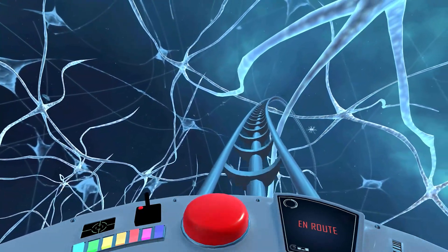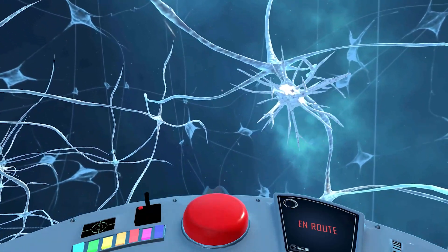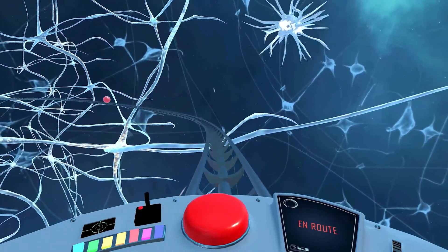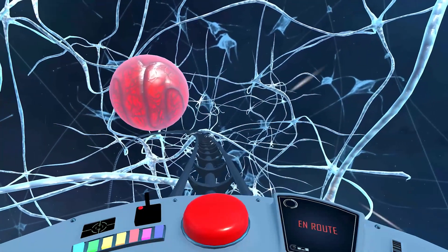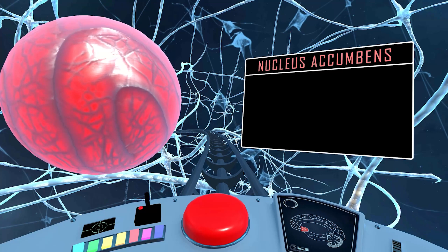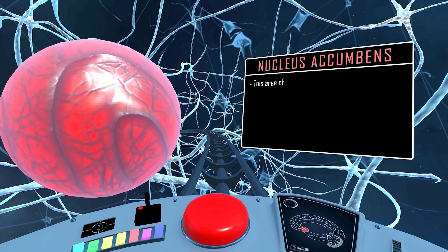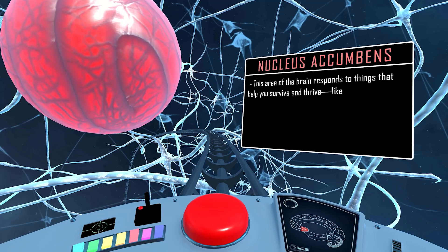Now, we'll travel deeper into the center of the brain to a small but mighty brain area. We have now reached the nucleus accumbens. This area of the brain responds to things that help you survive and thrive, like delicious food.